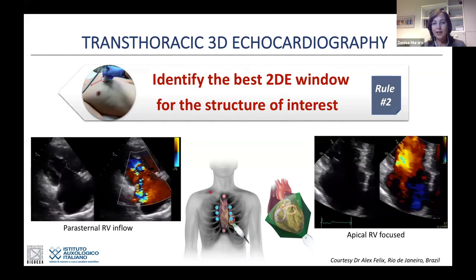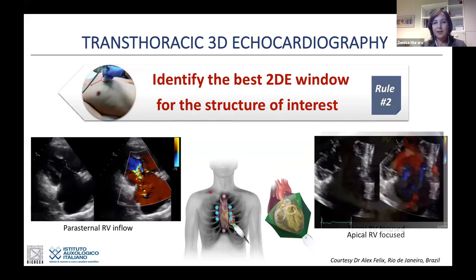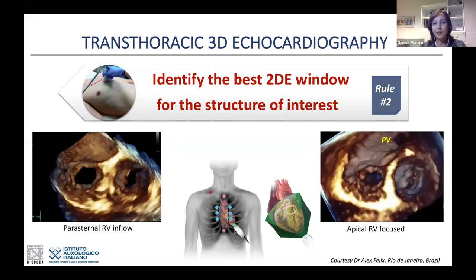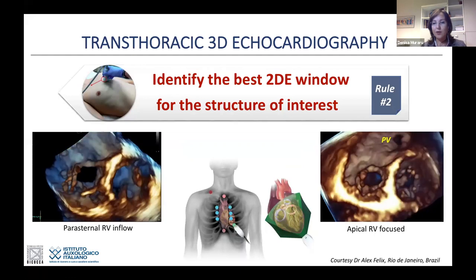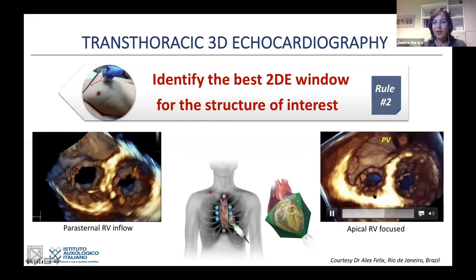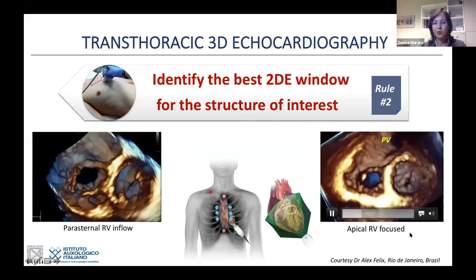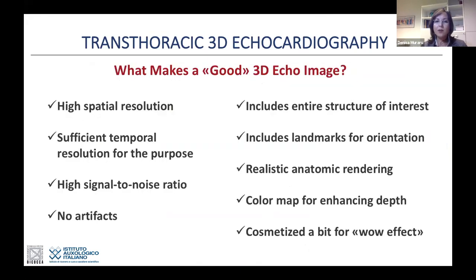First identify the best 2D window for the structure of interest. For the tricuspid valve, you might look from the parasternal right ventricular inflow view or the apical right ventricular focused view—depending on the patient, one may have better image quality. From the parasternal approach, you have the benefit of axial and lateral resolution, giving clearer, better spatial resolution. From the apical acquisition, image quality may be slightly less defined but you can include more structures such as the pulmonary valve and surrounding structures like the mitral valve. What makes a good 3D echo image? It has to have high spatial resolution, sufficient temporal resolution, a high signal-to-noise ratio, no artifacts, and include the entire structure of interest with anatomical landmarks for orientation.